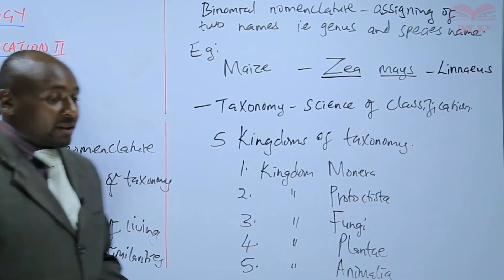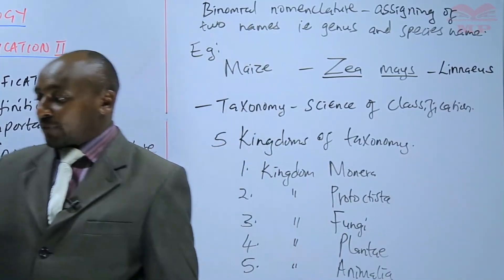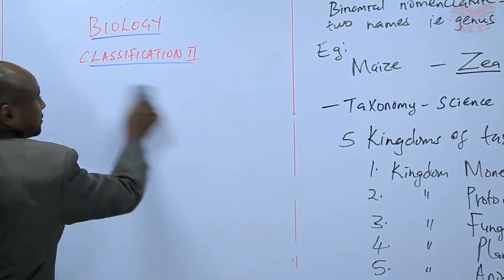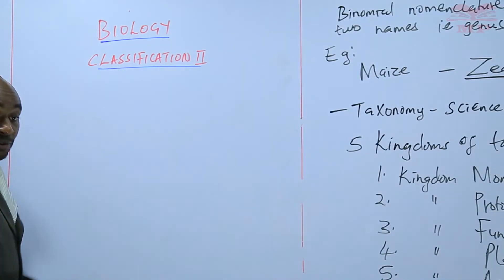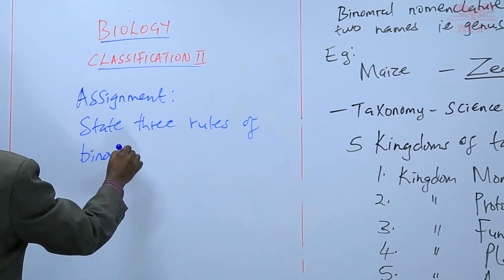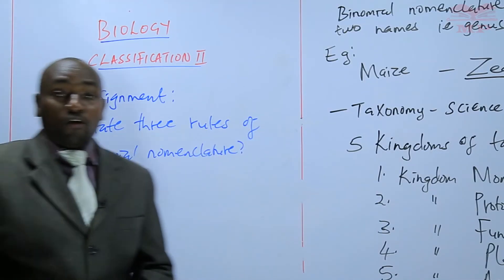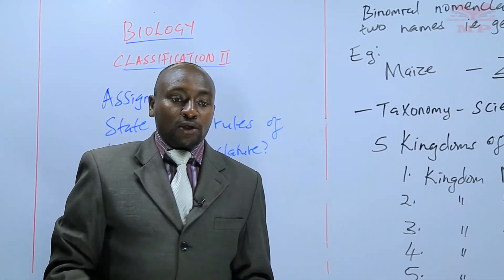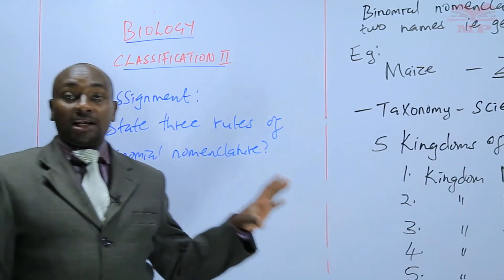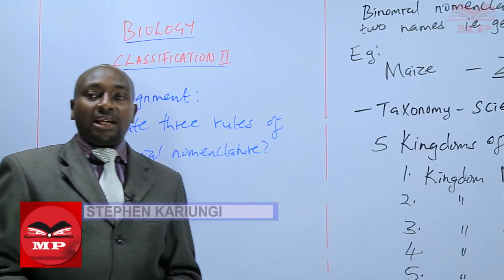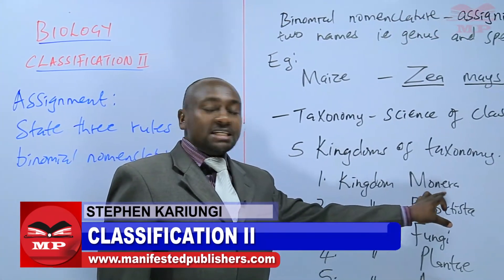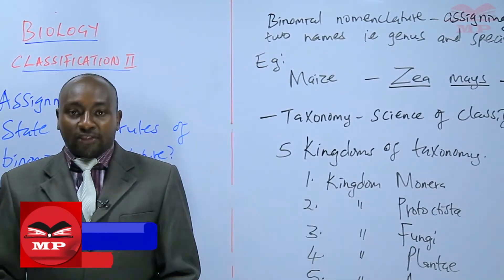We'll stop there for today. The assignment for today: state three rules of binomial nomenclature. That marks the end of today's lesson. We have reviewed classification one. The next lesson, we shall embark on classification two, where we shall start explaining the kingdoms in detail according to their characteristics. Thank you and have a good day.